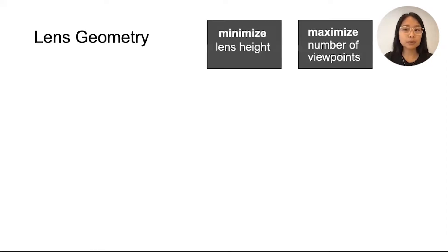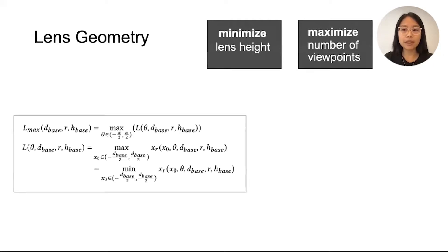To find a good balance between the two factors, we've calculated how different lens parameters affect the size of the largest image spot, which is inversely related to the number of viewpoints.